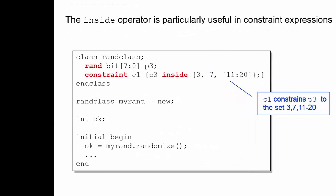Now watch out for the syntax. Let's break this down. I have constraint C1 open curly brackets to open my constraint block. I then have the constraint P3 inside. Another open curly brackets opens up the list of items for the inside operator.